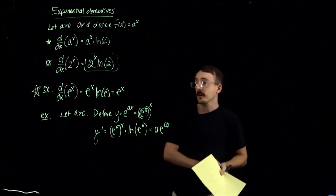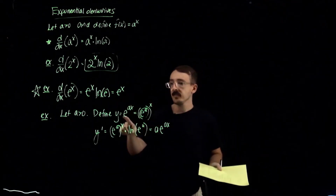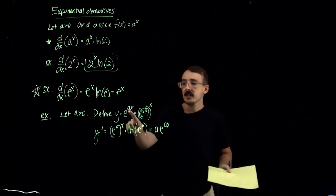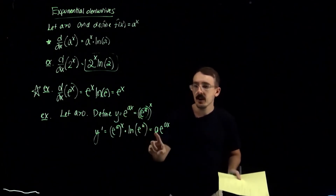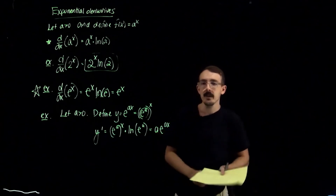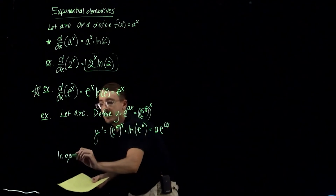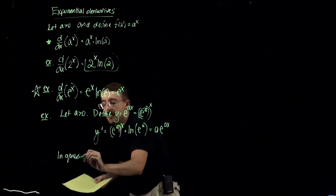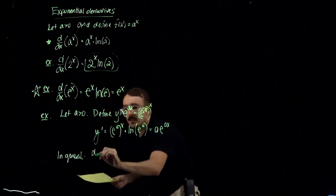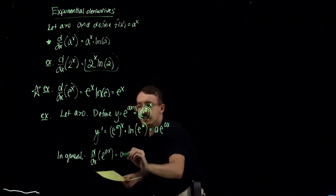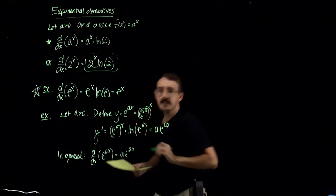So what happened here in general: if you take the derivative of e^(ax) where a is a constant in front, the answer is just that constant a brought out front times e^(ax). In general, the derivative of e^(ax) is a·e^(ax).